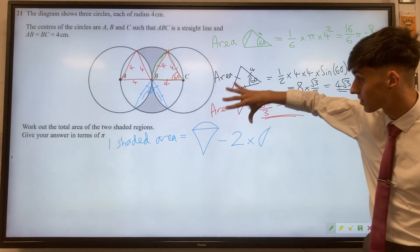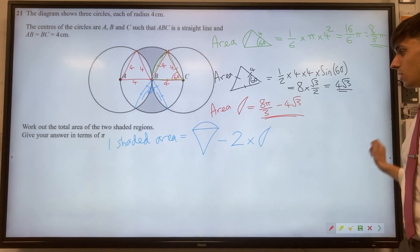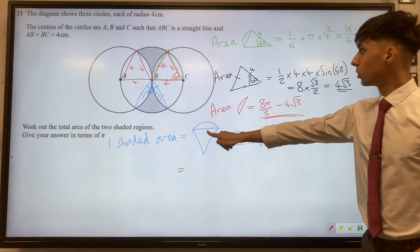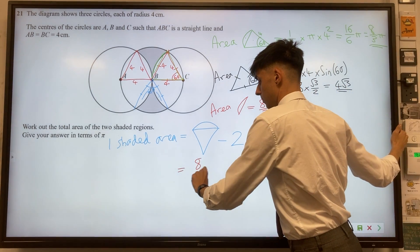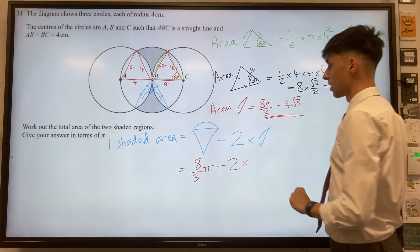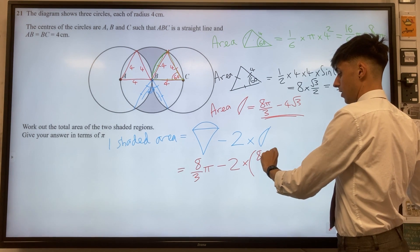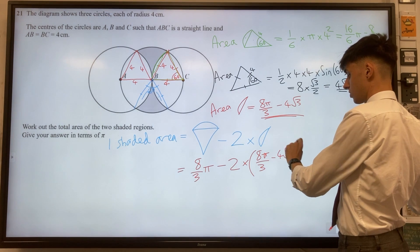What we need to do is find one of those shaded areas and then double it at the end. One whole pizza slice is 8π/3, and we need to take away two of our pizza crusts, so that's 8π/3 - 2(8π/3 - 4√3).